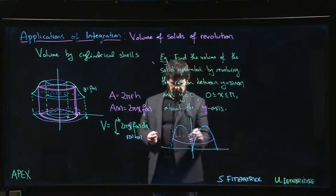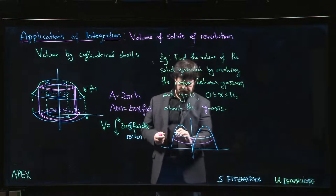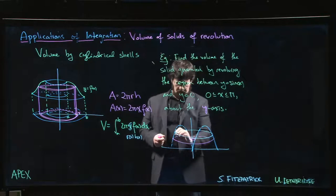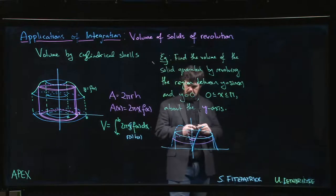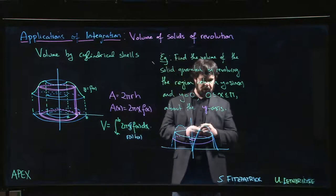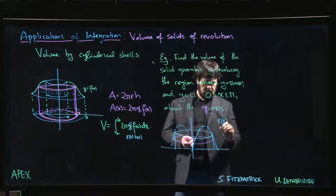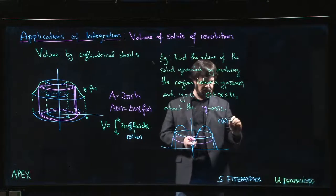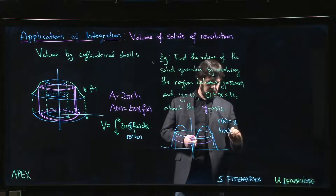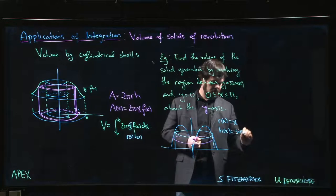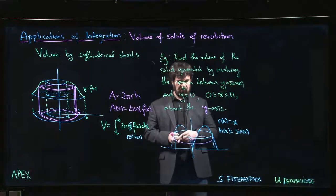And so we'd say, well, what does a typical shell look like? So a typical shell is going to look something like this. So typical shell has radius, in this case, just given by x because we're going about the y-axis, height given by sine x. Not so bad. X times sine x.